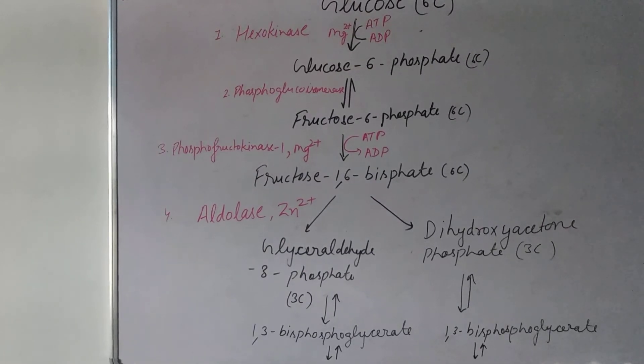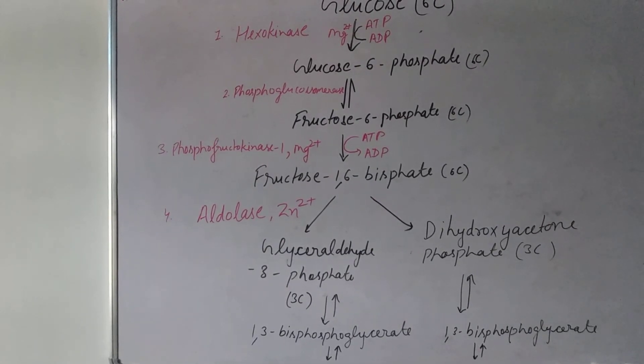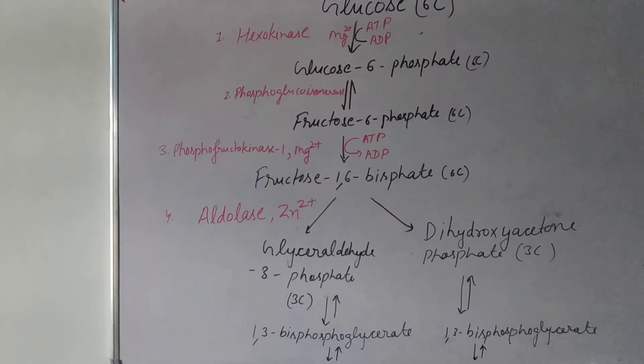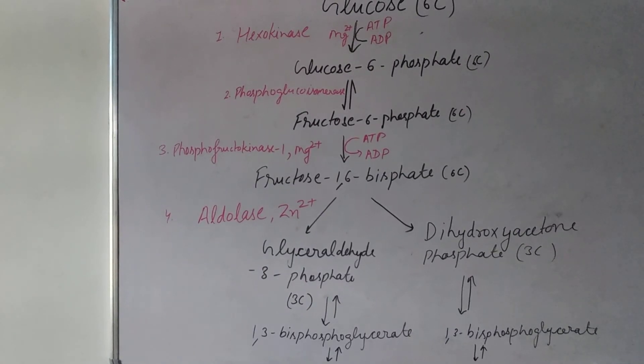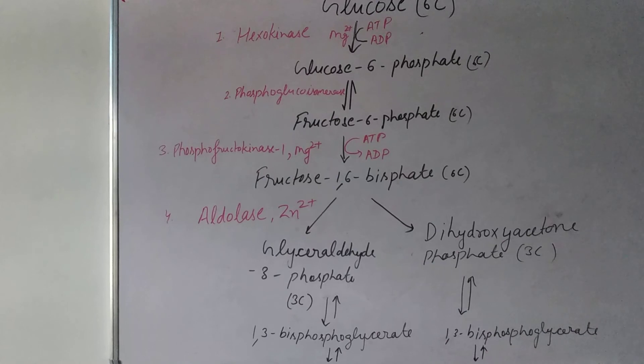I will show you how the products form in one cycle: dihydroxyacetone-phosphate, 1,3-bisphosphoglycerate, and glyceraldehyde 3-phosphate.